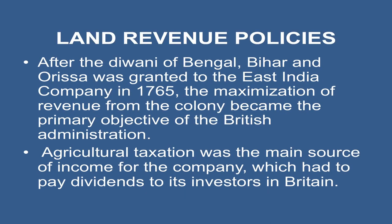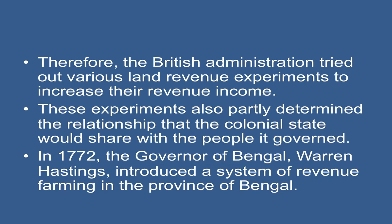After the Diwani of Bengal, Bihar, and Orissa was granted to the East India Company in 1765, the maximization of revenue from the colony became the primary objective of the British administration. Agricultural taxation was the main source of income for the company, which had to pay dividends to its investors in Britain. Therefore, the British administration tried out various land revenue experiments to increase their revenue income.